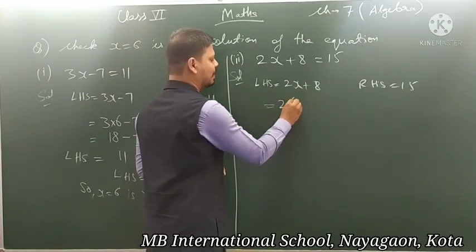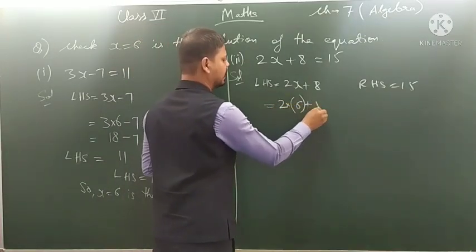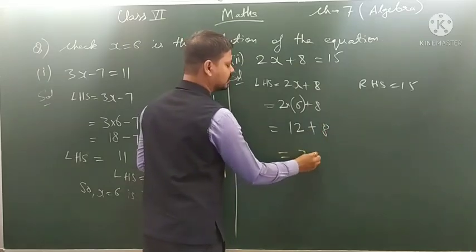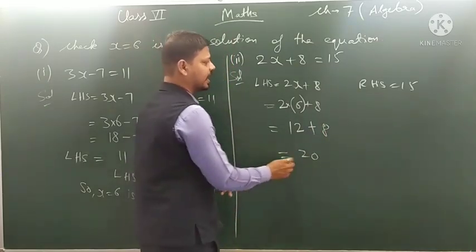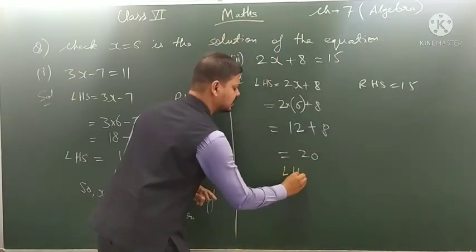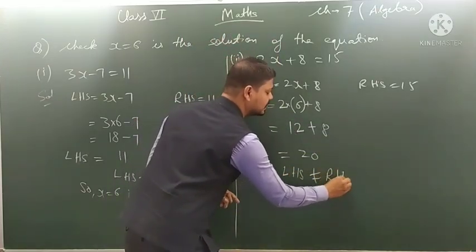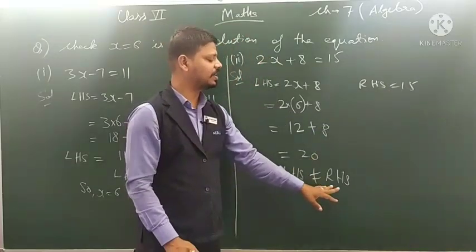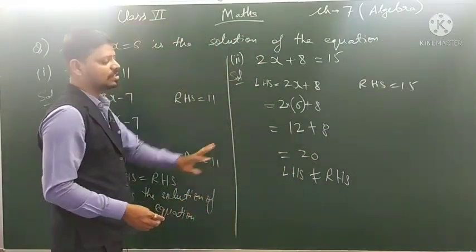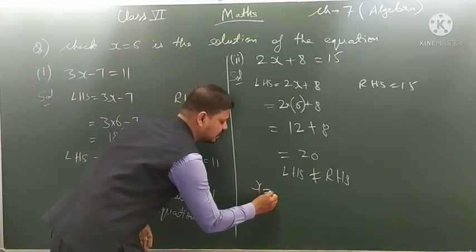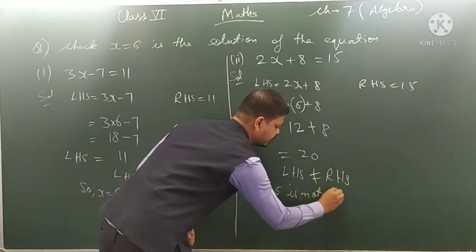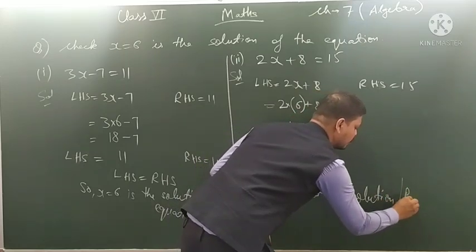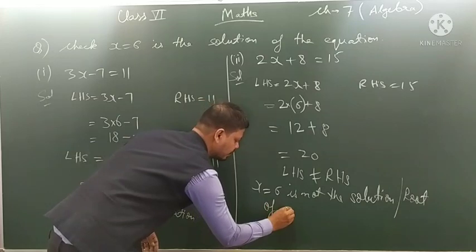We put the value: 2 multiplied by 6 plus 8. 2 multiplied by 6 is 12, and 12 plus 8 is 20. So LHS is 20 and RHS is 15. LHS is not equal to RHS, because LHS gives 20 and RHS gives 15. So x equals to 6 is not the solution, or the root, of this equation.